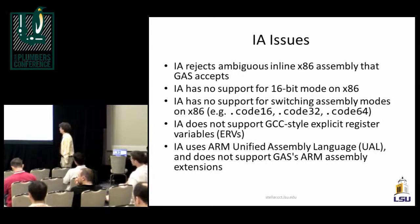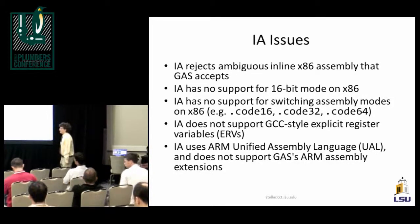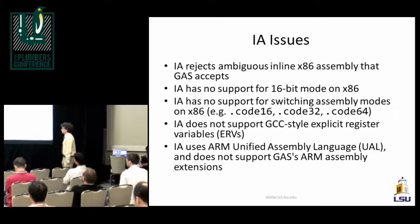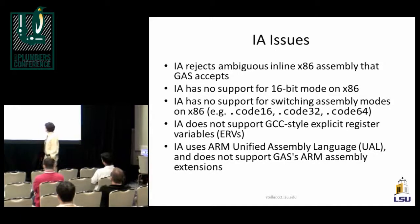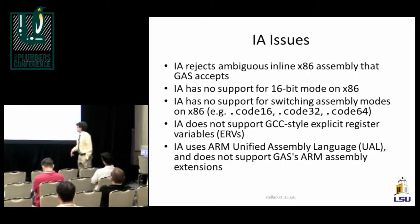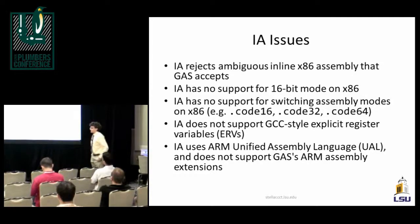Peter's other issue was being able to have unified x86 code without having to specify operand lengths. That's what we've been trying to fix. Peter is very adamant about having a single code base across x86, which makes a lot of sense. Also, the integrated assembler does not support GCC-style explicit register variables, which becomes a problem for getting to the stack pointer and a number of other places. There are also some ARM incompatibilities between the GNU assembler and the integrated assembler.